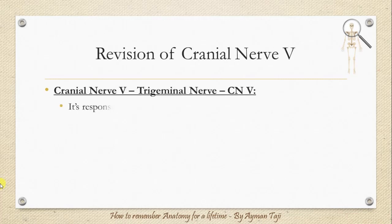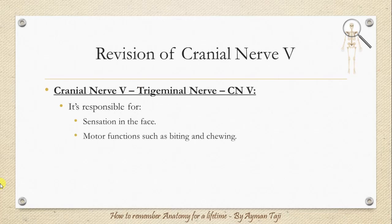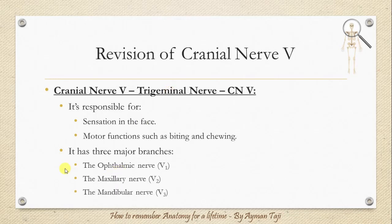The fifth cranial nerve or trigeminal nerve is responsible for sensation in the face and motor functions such as biting and chewing. It's the largest of the cranial nerves, and its name 'trigeminal' derives from the fact that the nerve has three major branches: the ophthalmic nerve, the maxillary nerve, and the mandibular nerve. The ophthalmic nerve itself has three branches: the nasociliary nerve, lacrimal nerve, and frontal nerve.